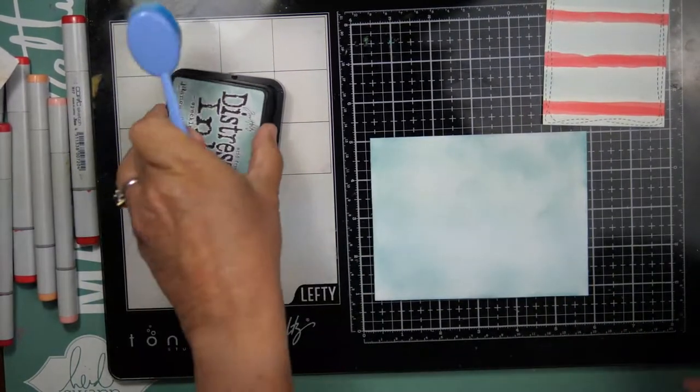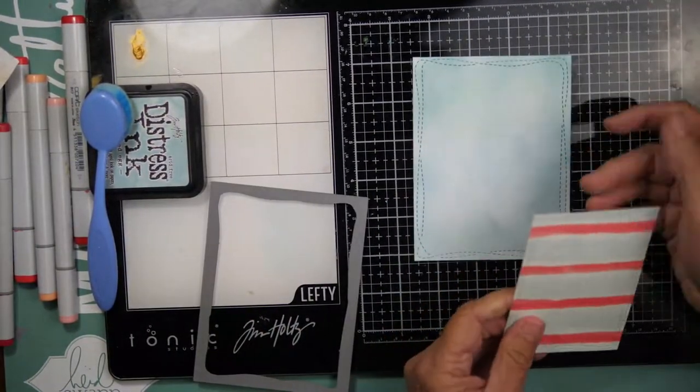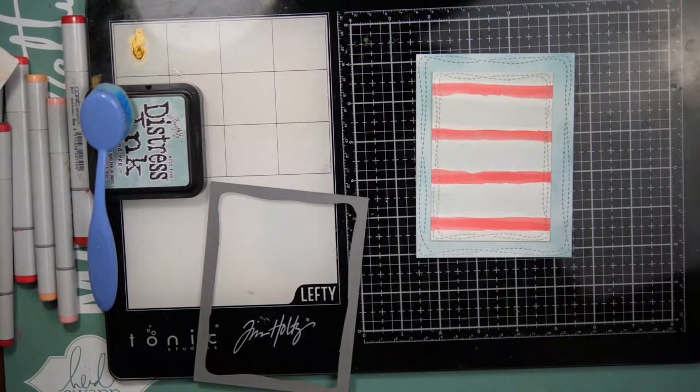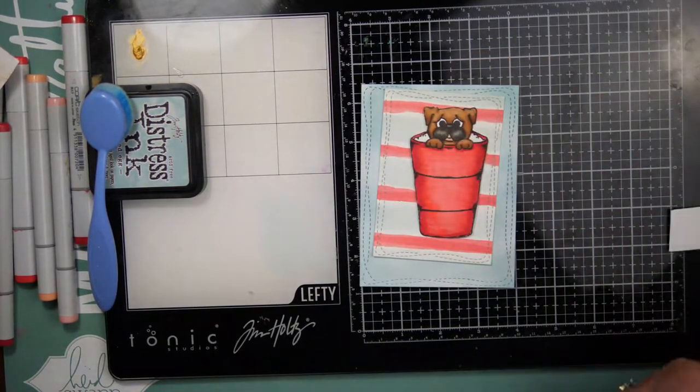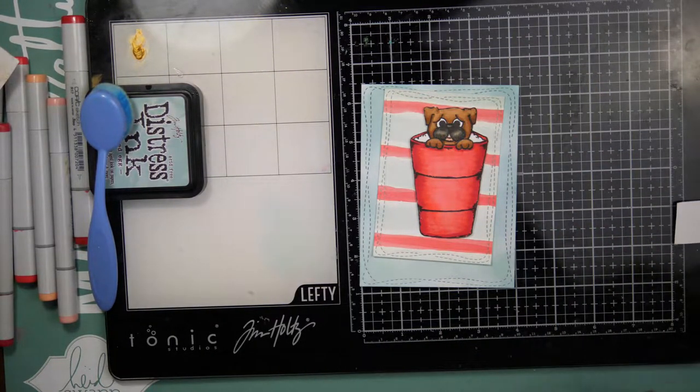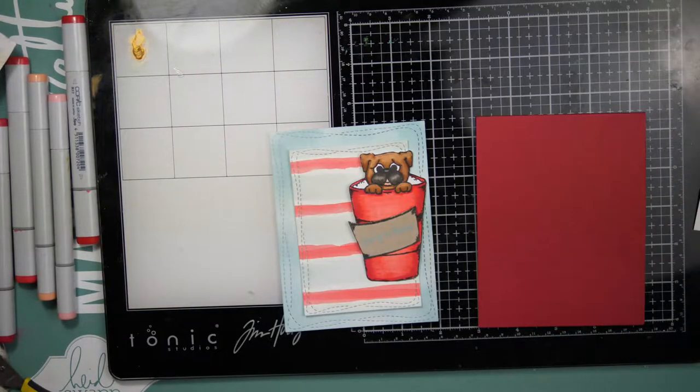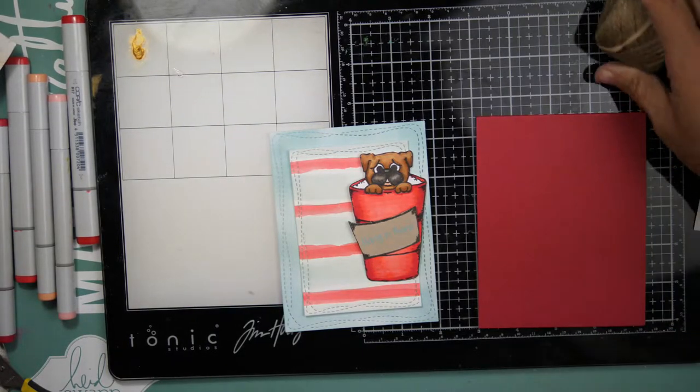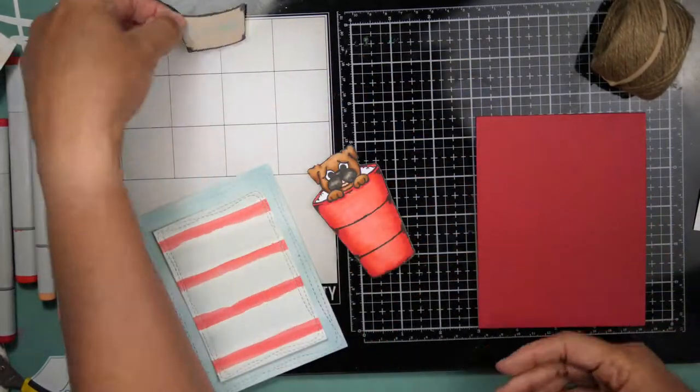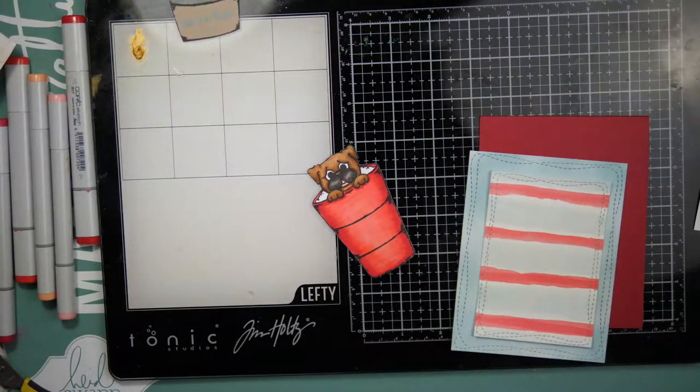I tell you, I can't wait to see what other colors Tim Holtz has up his sleeve. It's super exciting that we are getting some more colors. Now this is a Gina K Designs panel card base. I have cut it down to 4.25 by 5.5.